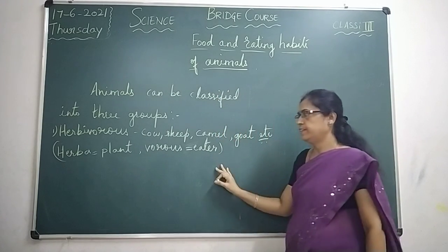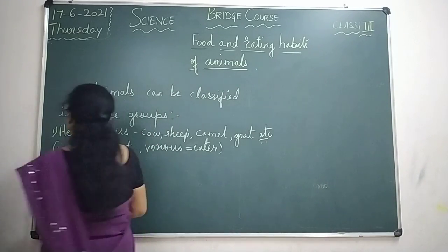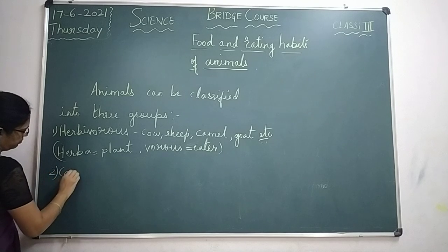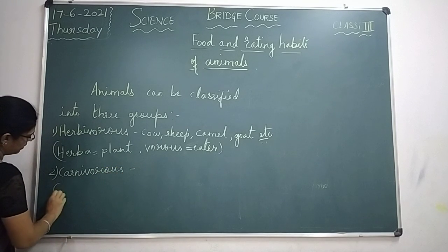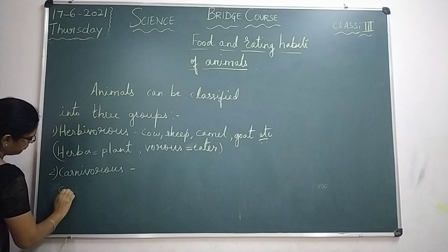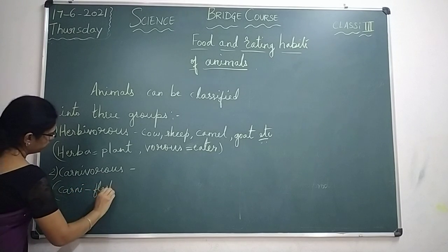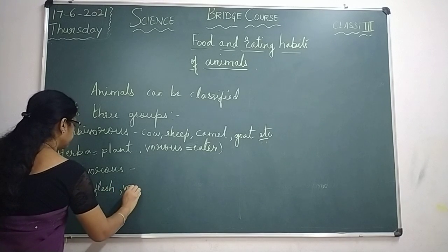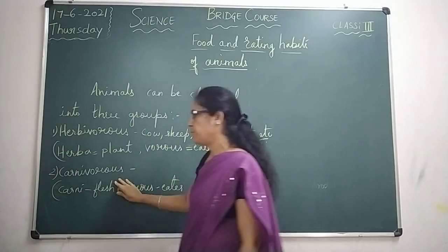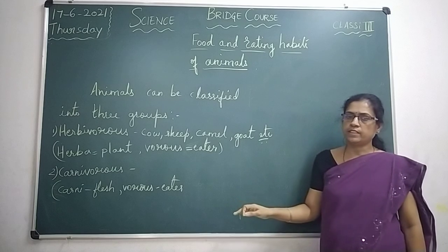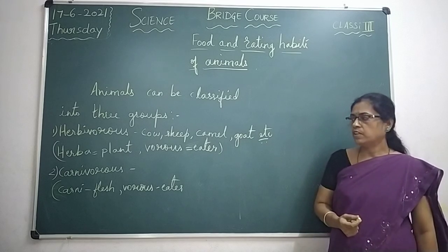The second group is carnivores. Carnivores — 'carni' means flesh and 'vores' means eater. So what are carnivores? Animals such as tiger, lion, cheetah, etc. They eat the flesh of other animals.